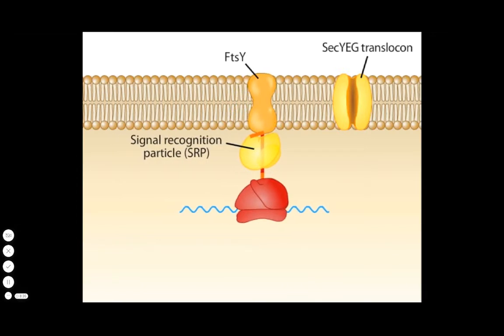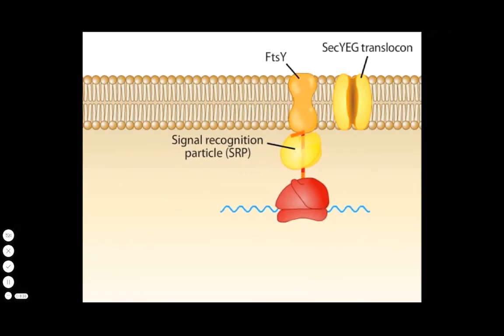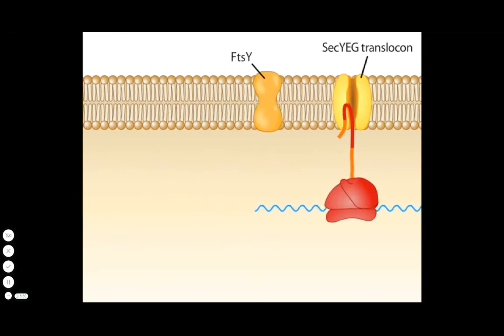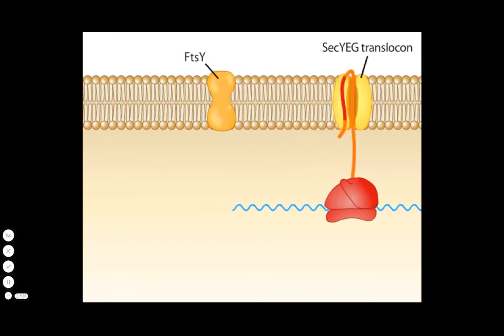In this process, SRP dissociates from the complex, prompting FtsY to deliver the signal sequence to the translocon.